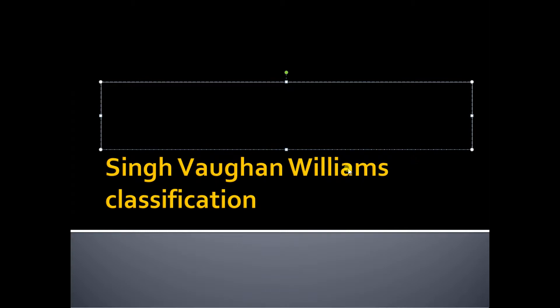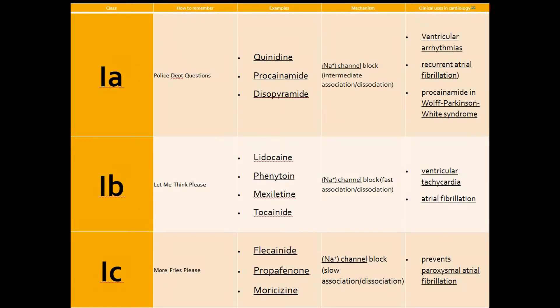Every antiarrhythmic to date can be grouped into one of these classes. There are five classes total, and I will go through each individually. Class 1 is subdivided into three types: 1A, 1B, 1C. Class 1 basically acts through sodium channel blocking. Depending on the speed at which they block, they are subdivided into A, B, C.